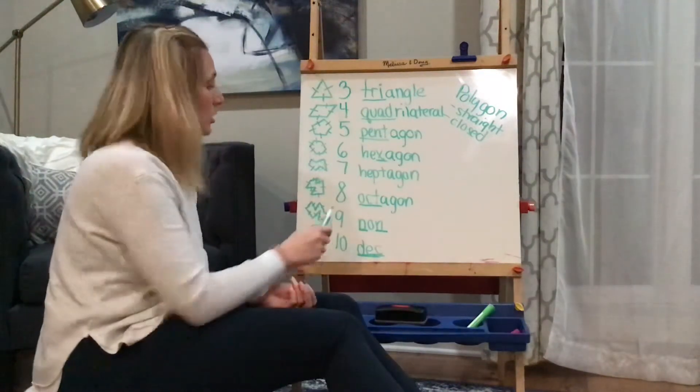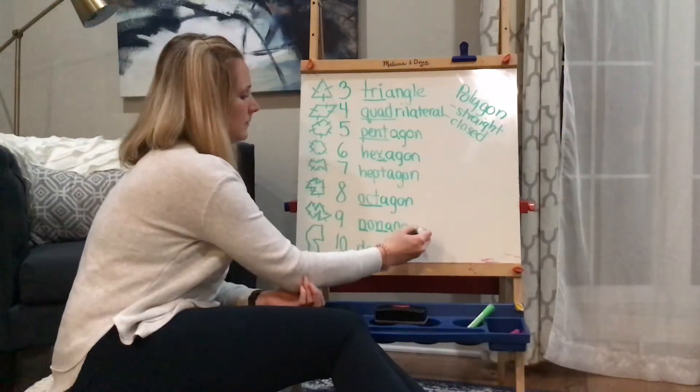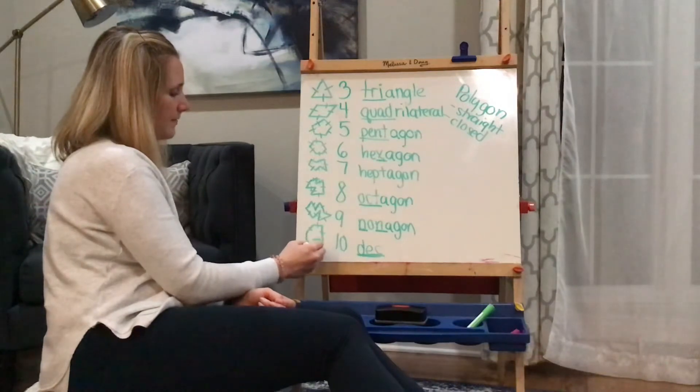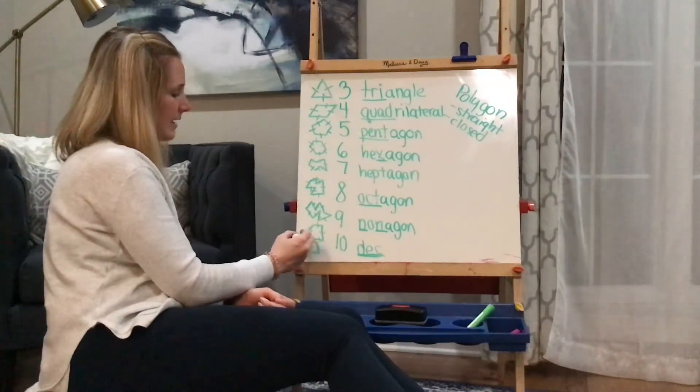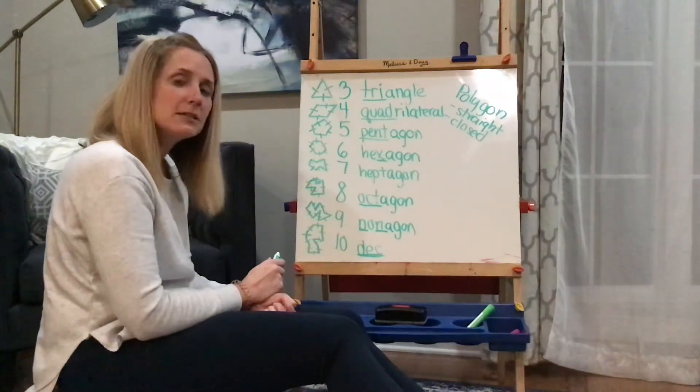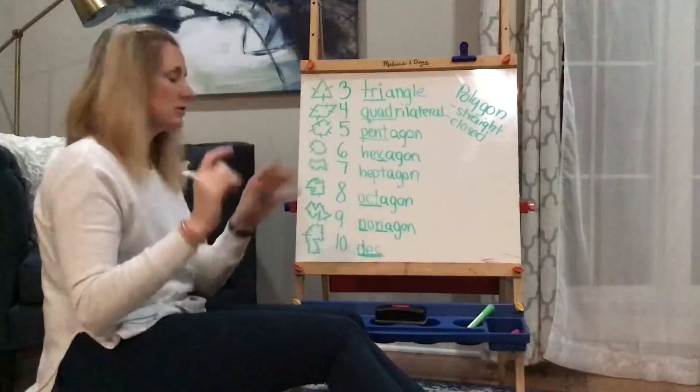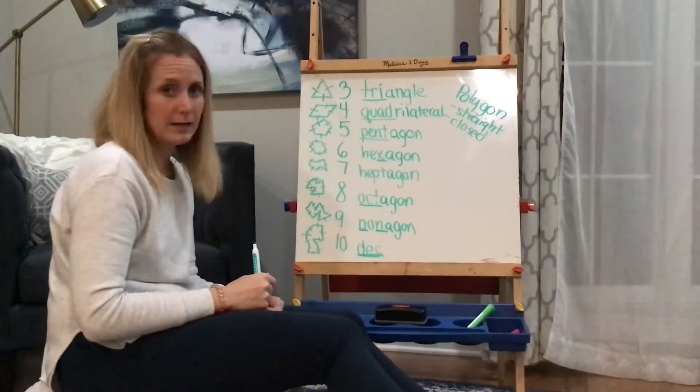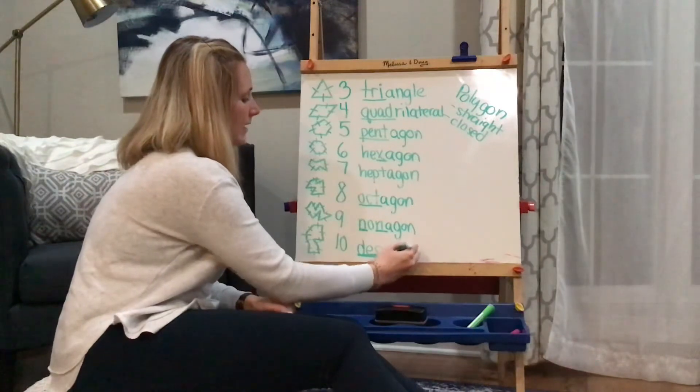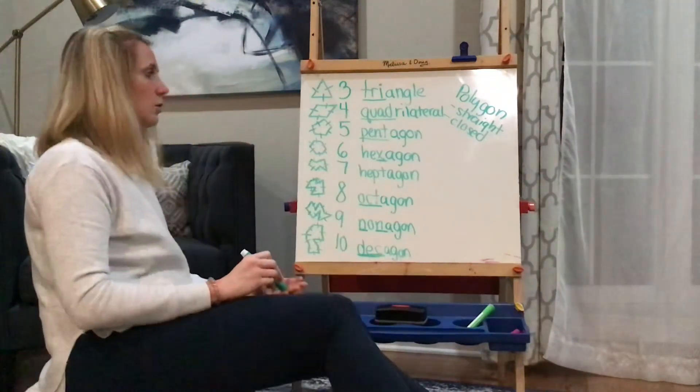And then the last one, let's count: one, two, three, four, five, six, seven, eight, nine, ten. I have ten sides. How many years are in a decade? You said ten years are in a decade, you are right. So a ten-sided figure is a decagon.